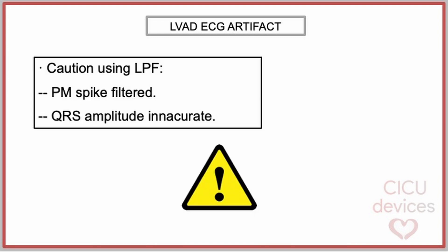When using a low-pass filter during electrocardiogram acquisition, certain precautions must be taken. Pacemaker spikes are also filtered, making it difficult to determine if there is stimulation by the device, and the determinations of the QRS amplitude may be inaccurate due to the filtering.